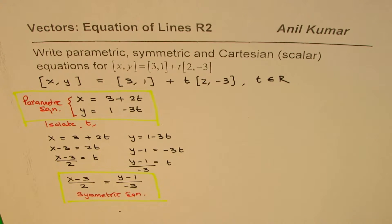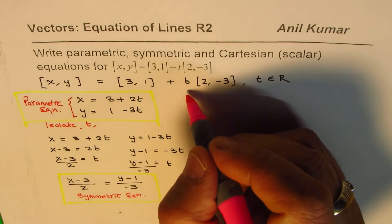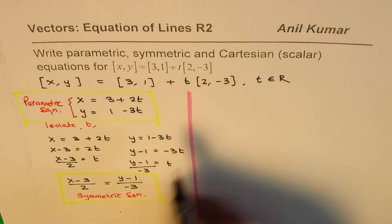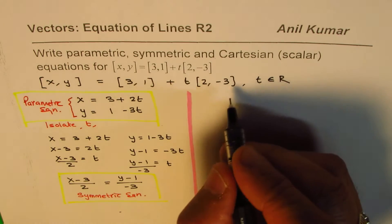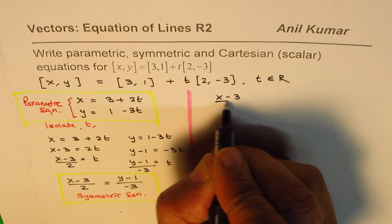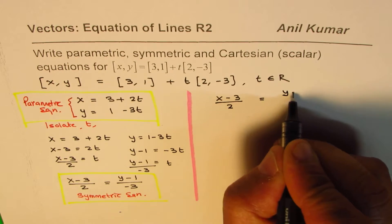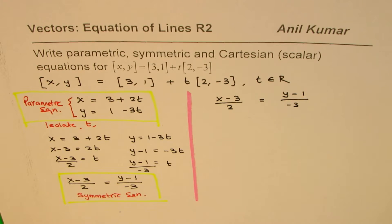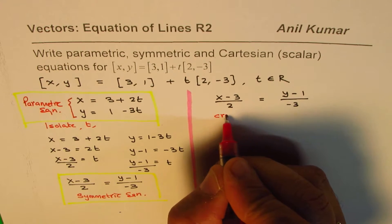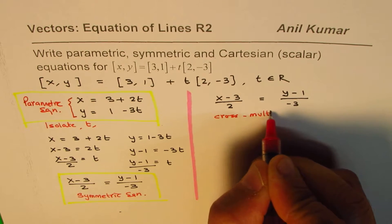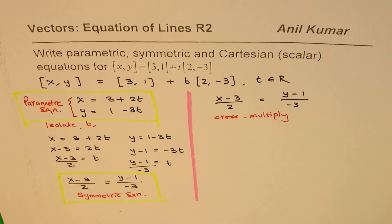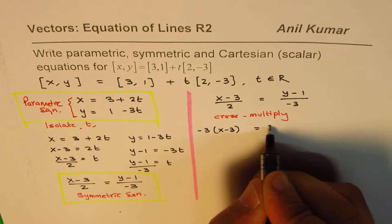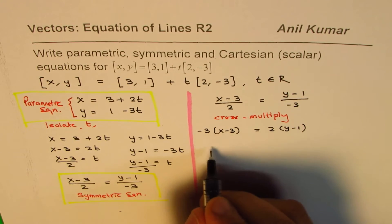Now the question is how to write the Cartesian equation. Well, let's begin with the symmetric equation to write Cartesian equation. So let's start with the symmetric equation, which is (x - 3)/2 equals to (y - 1)/(-3). You can cross multiply. So if you cross multiply, you get -3 times (x - 3) equals to 2 times (y - 1). Now distribute the property.